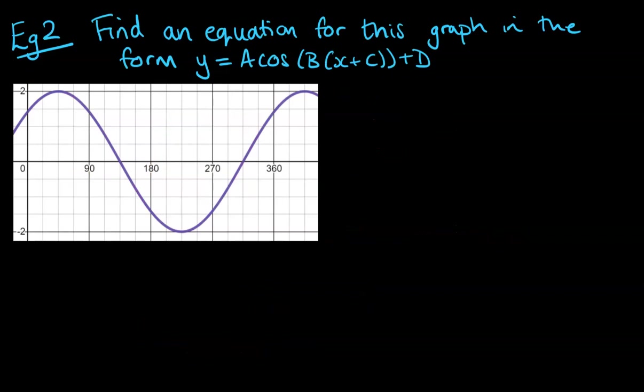We're going to look at a second example now, but this time it's specified that we want to find the equation for this graph in the form that includes cos instead of sine.